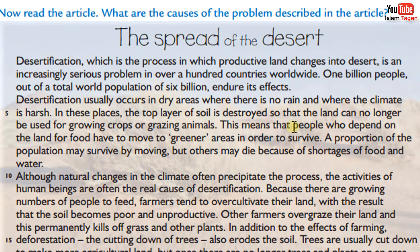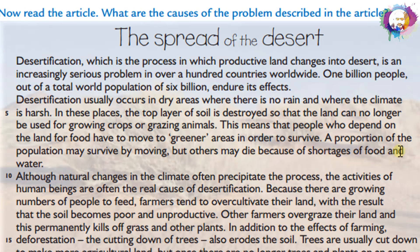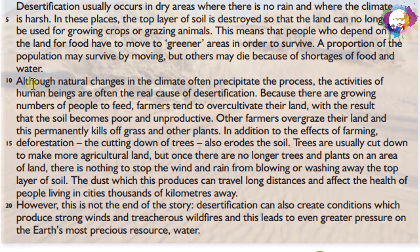This means that people who depend on the land for food have to move to greener areas in order to survive. A proportion of the population may survive by moving, but others may die because of shortages of food and water. Although natural changes in the climate often precipitate the process, the activities of human beings are often the real cause of desertification.